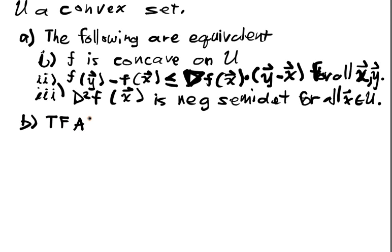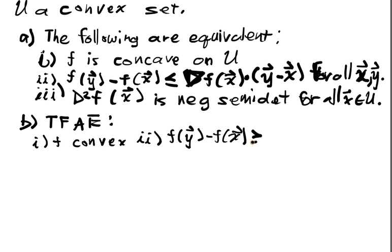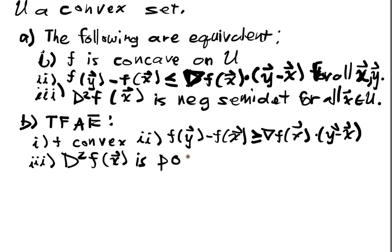Also the following are equivalent. So now we also have convexity. Right, so F convex is equivalent to f(y) minus f(x), now I reverse the inequality, greater than or equal to gradient F at x dotted with (y minus x). And of course the third thing is that the Jacobian F of x is positive semi-definite for all x in u. Those are equivalent and it's basically the same idea.